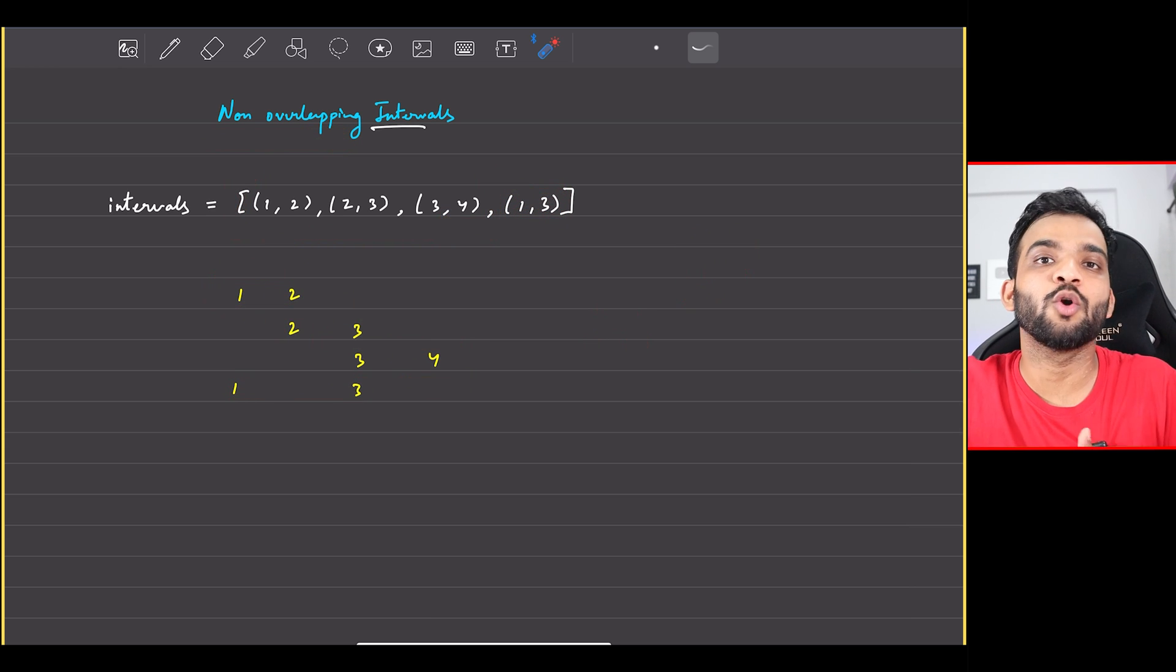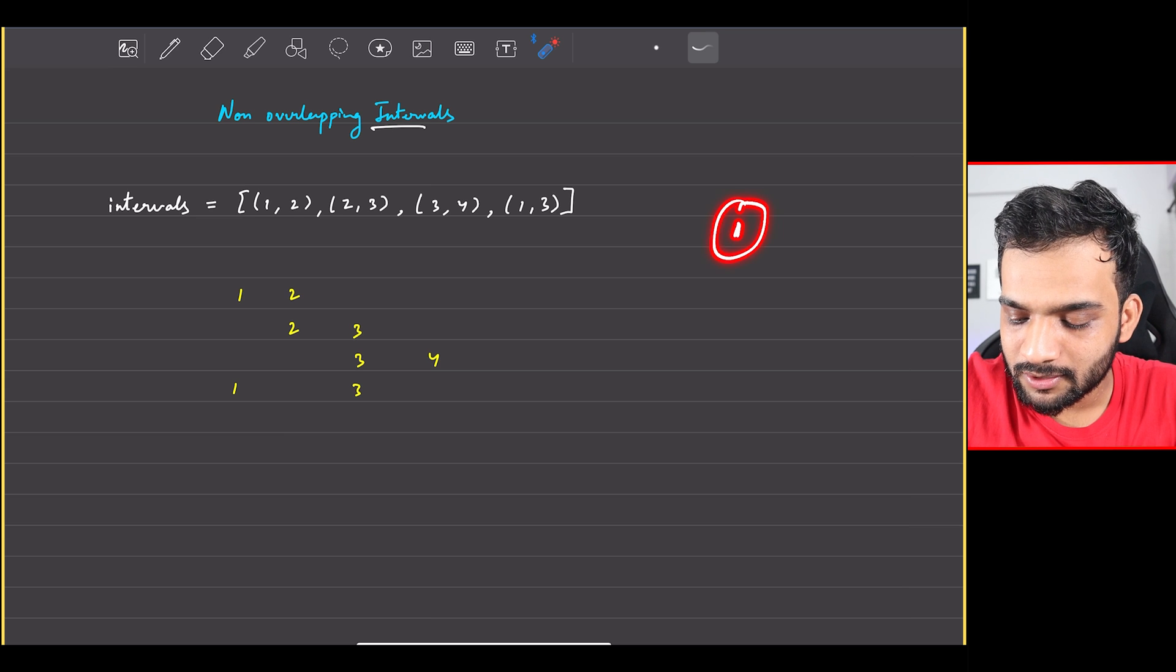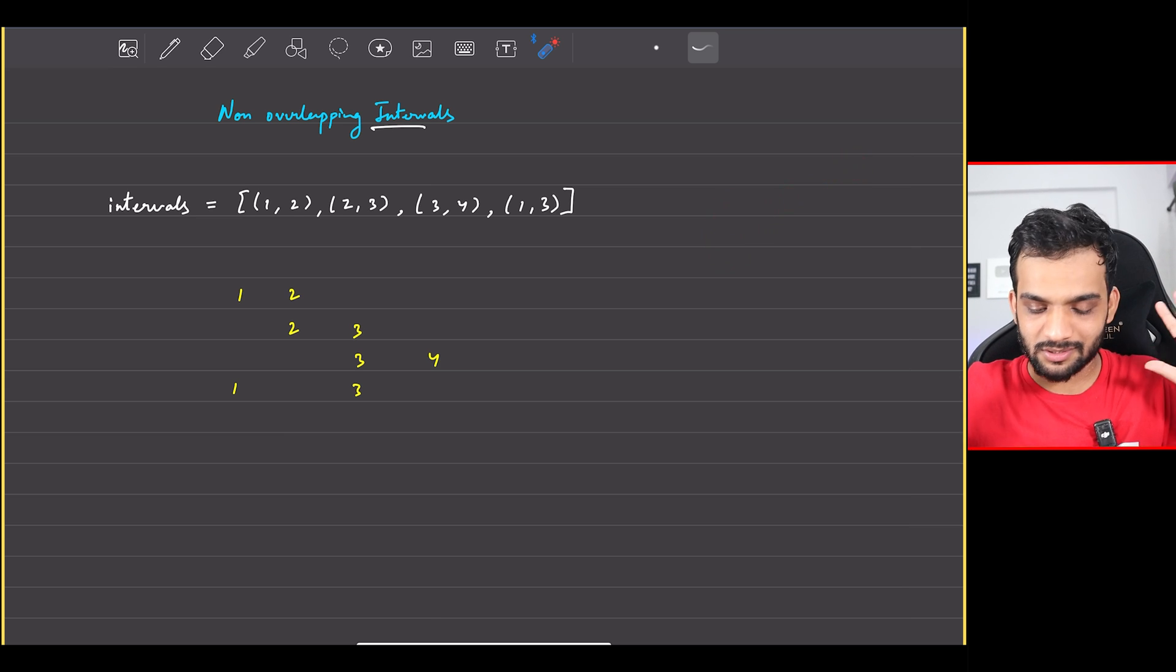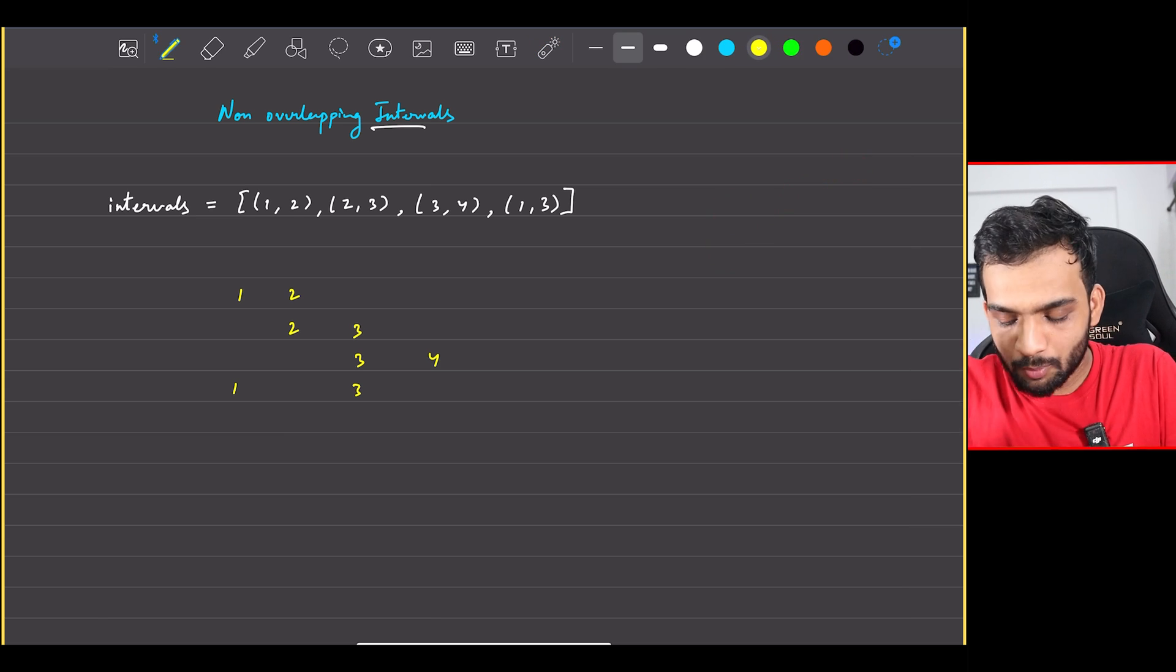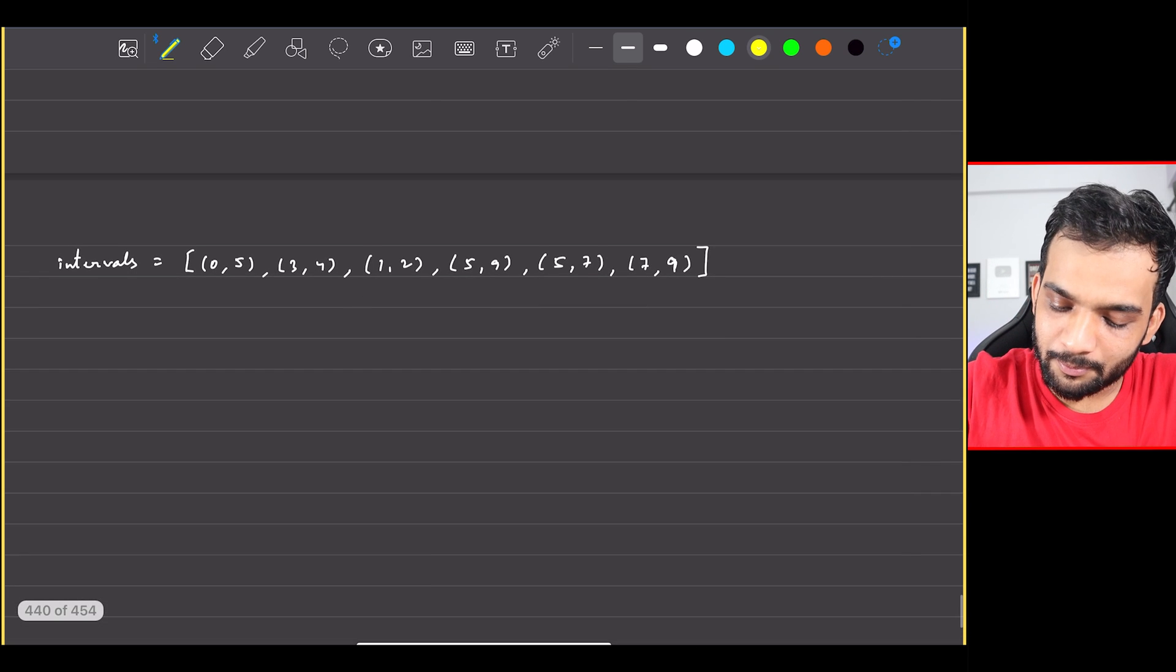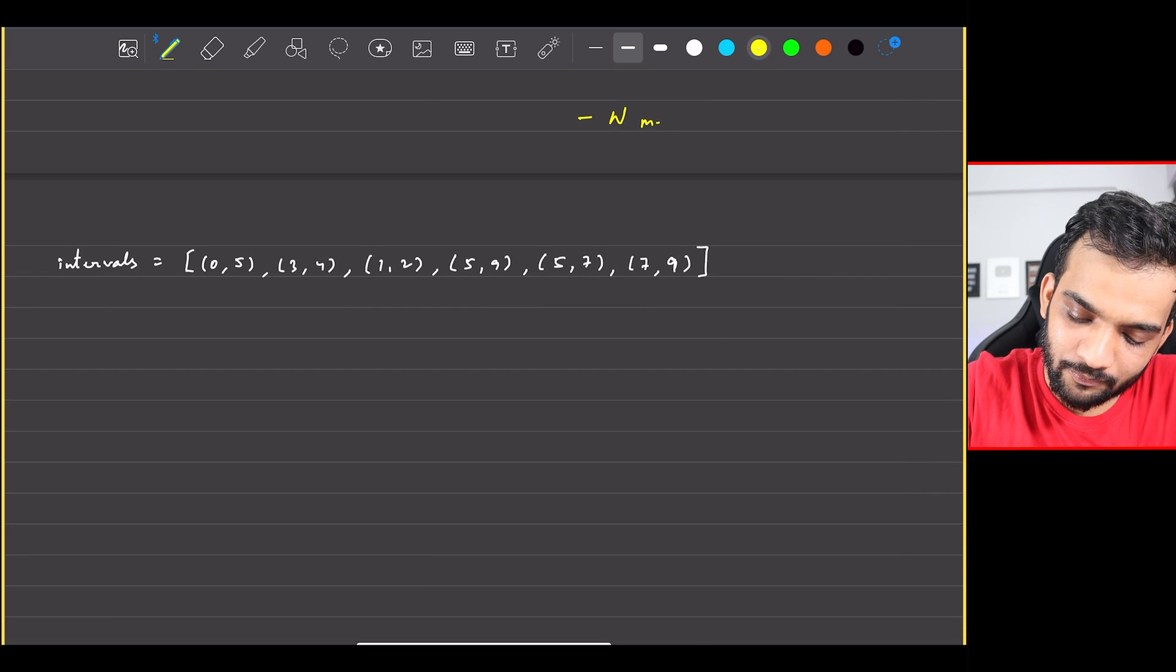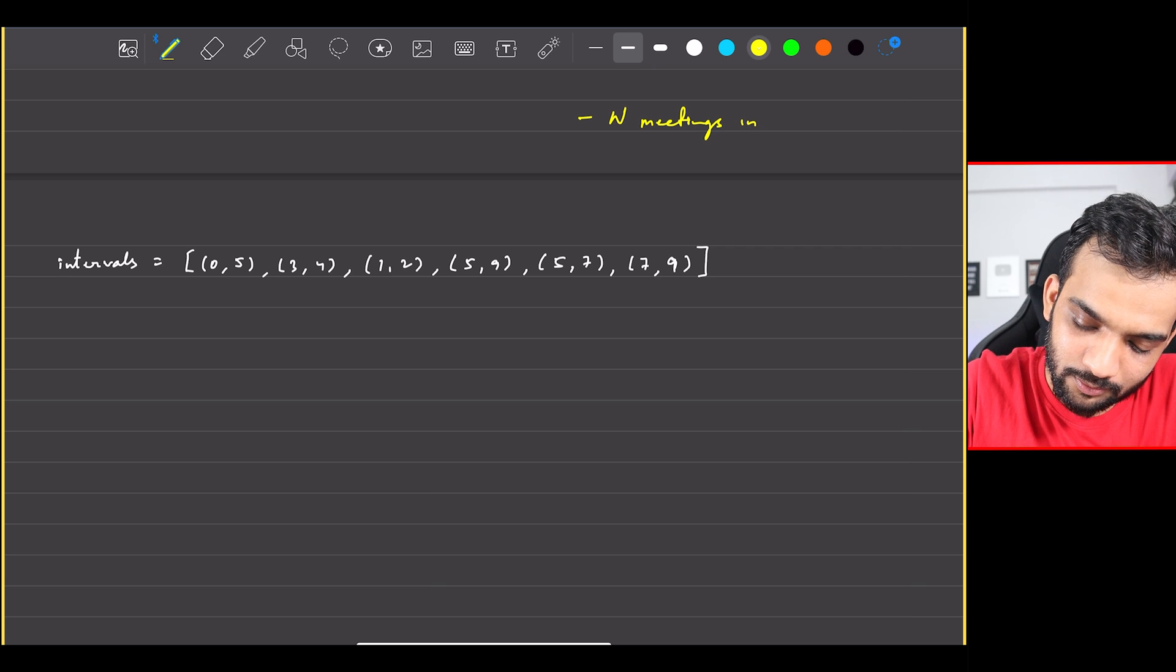So I can remove one and my job will be done, which is the minimal - two removals or one removal: one. So they want you to return this number, nothing else. Yes, so there is a small prerequisite for this problem. Please go back and watch my video in the same playlist which is N meetings in one room.